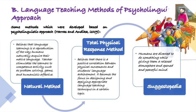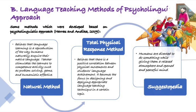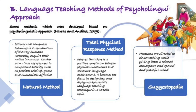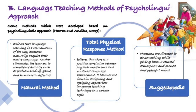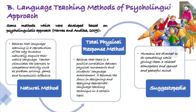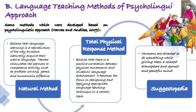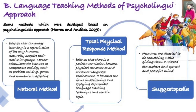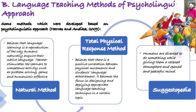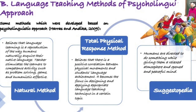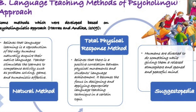Moving on to the explanation on language teaching methods of psycholinguistics approach. Psycholinguistics has been used widely as a fundamental theory in developing language teaching methods. According to Haras and Andika, there are three methods developed based on a psycholinguistics approach. Firstly, the natural method, which believes that language learning is a reproduction of the way humans naturally acquire their native language; teachers simulate learners through competence activities such as problem solving, games, and humanistic affective. Secondly, the total physical response method, which believes there is a positive correlation between physical movements and students' language achievement, and it becomes the focus in designing appropriate language teaching techniques.